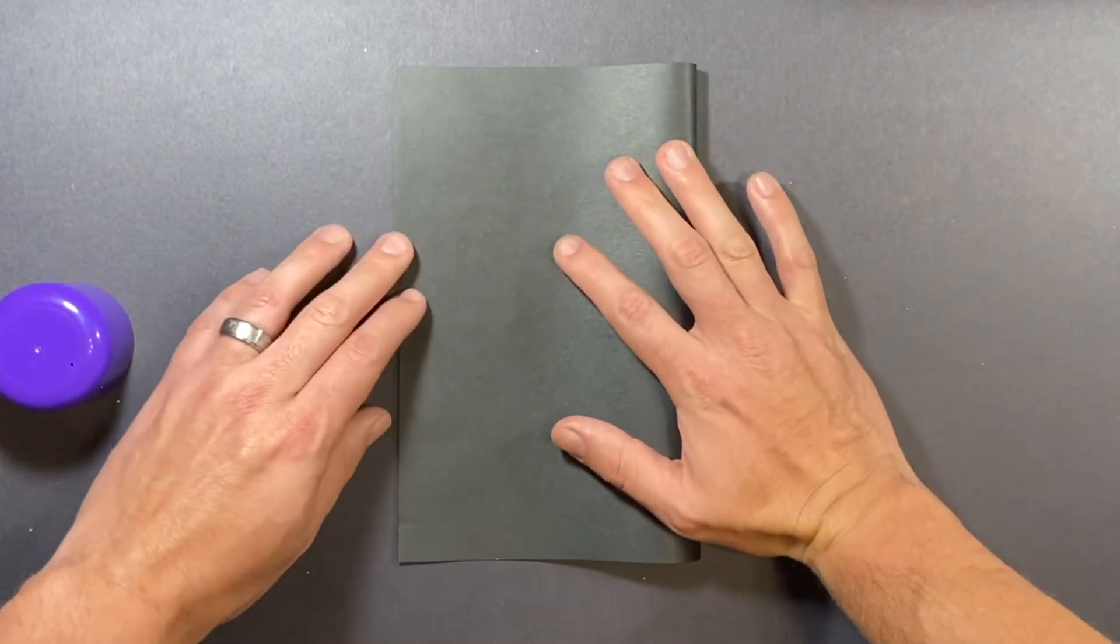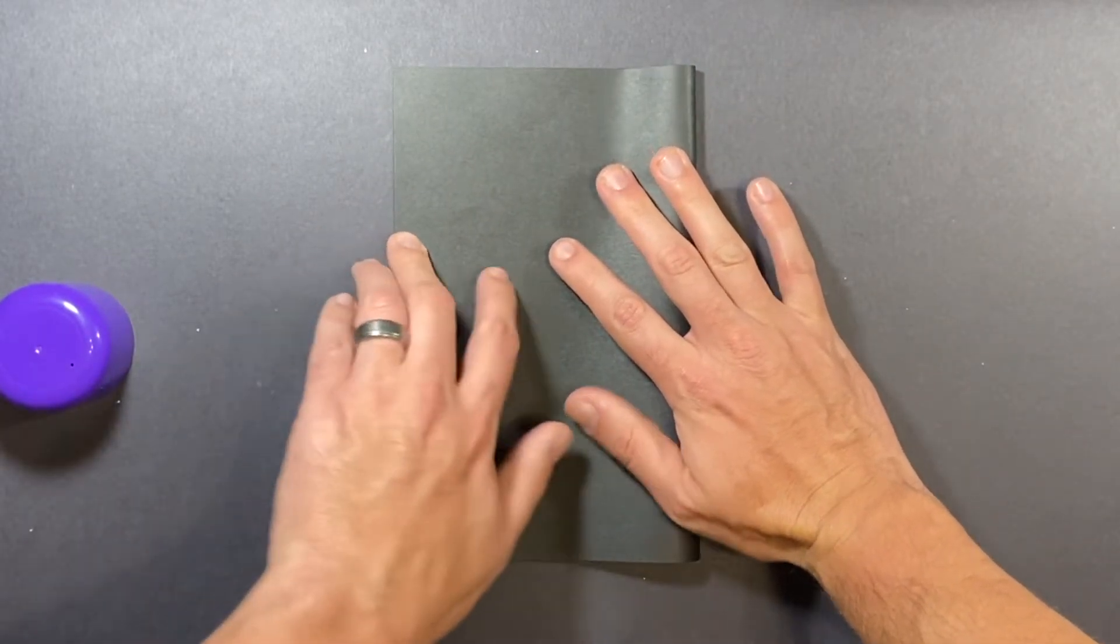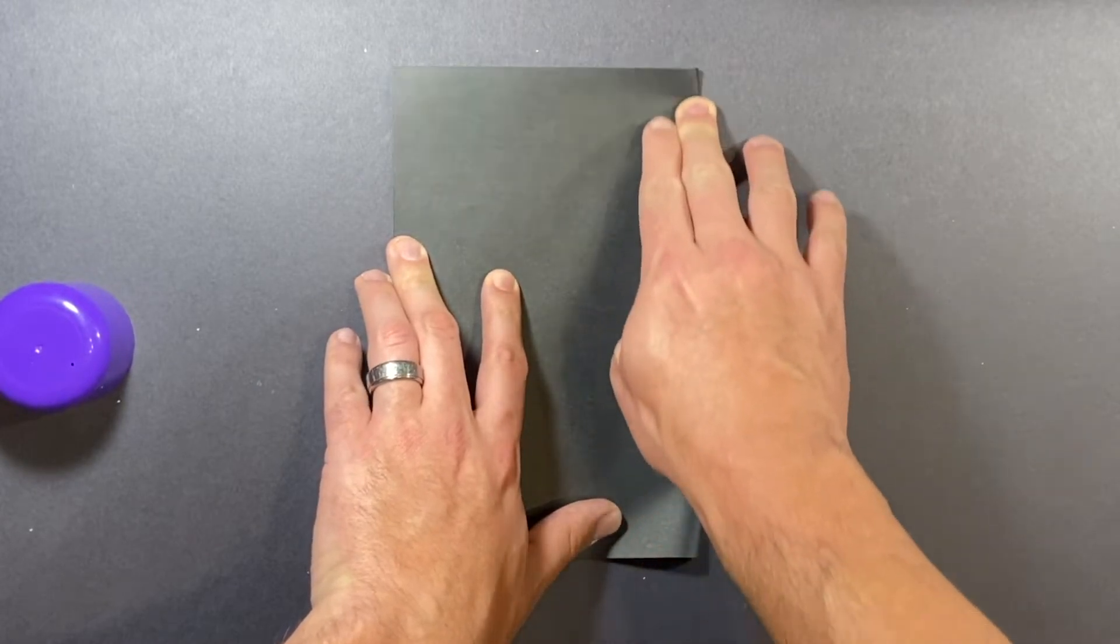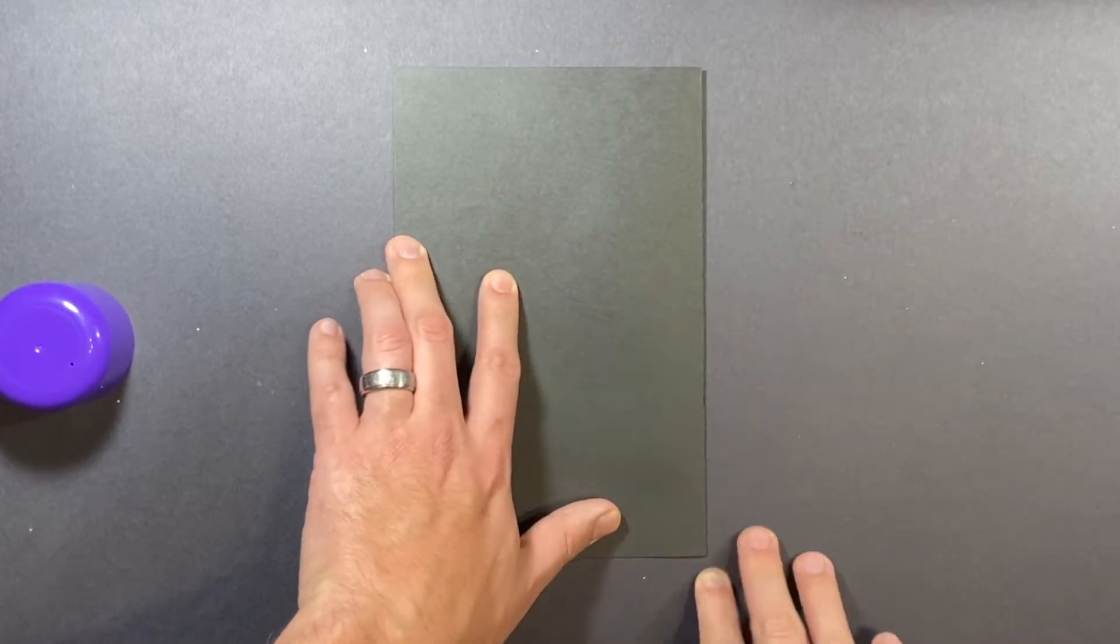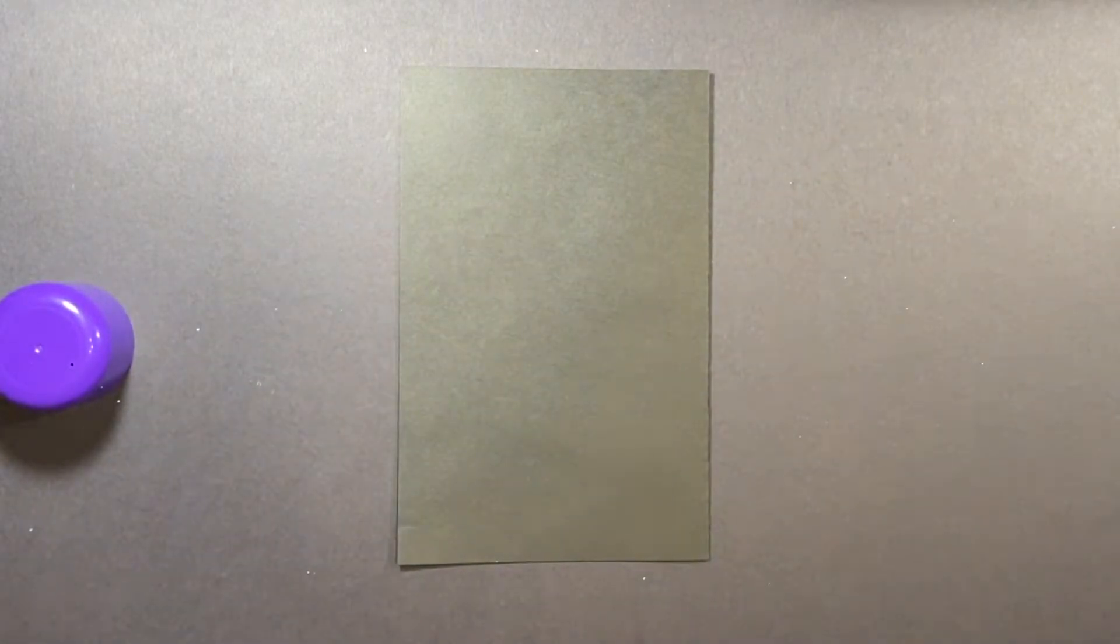Fold that paper in half, whether it's black or it's white, and give it a nice crease. And you know what we're doing. You remember from last time. We're working smarter, not harder.